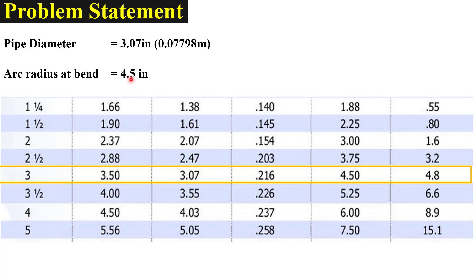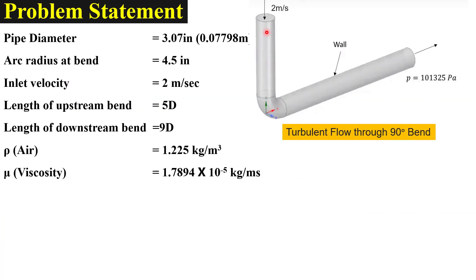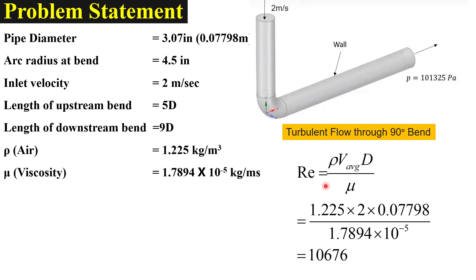The arc radius is 4.5 inches. The velocity at the inlet is equal to 2 meters per second. The length of the upstream pipe is kept at 5 times the diameter, and the downstream length of the pipe has been kept at 9 times the diameter. Air is used as the working fluid. These upstream and downstream lengths are added to the elbow to make the flow fully developed. With this data we can find that the Reynolds number is equal to almost 10,000, so the flow inside the pipe is fully turbulent.